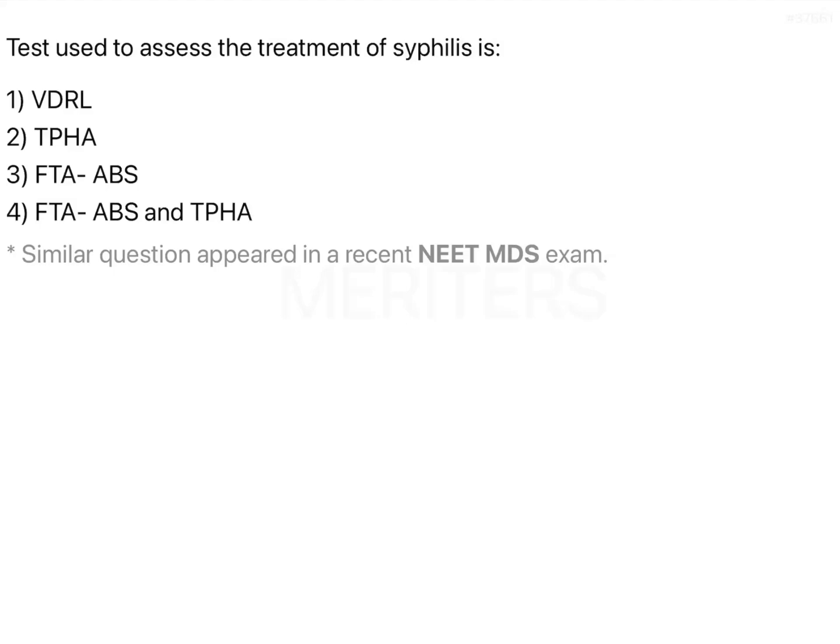The question is about testing for syphilis versus treatment of syphilis. The options are: VDRL, TPHA, FTA-ABS, or FTA-ABS and TPHA.